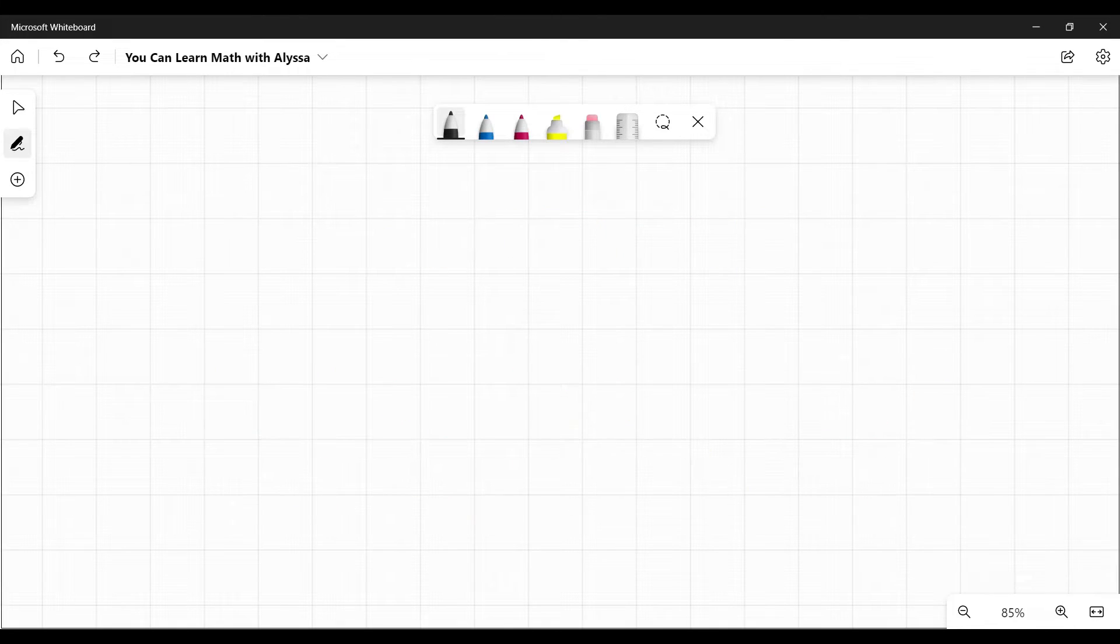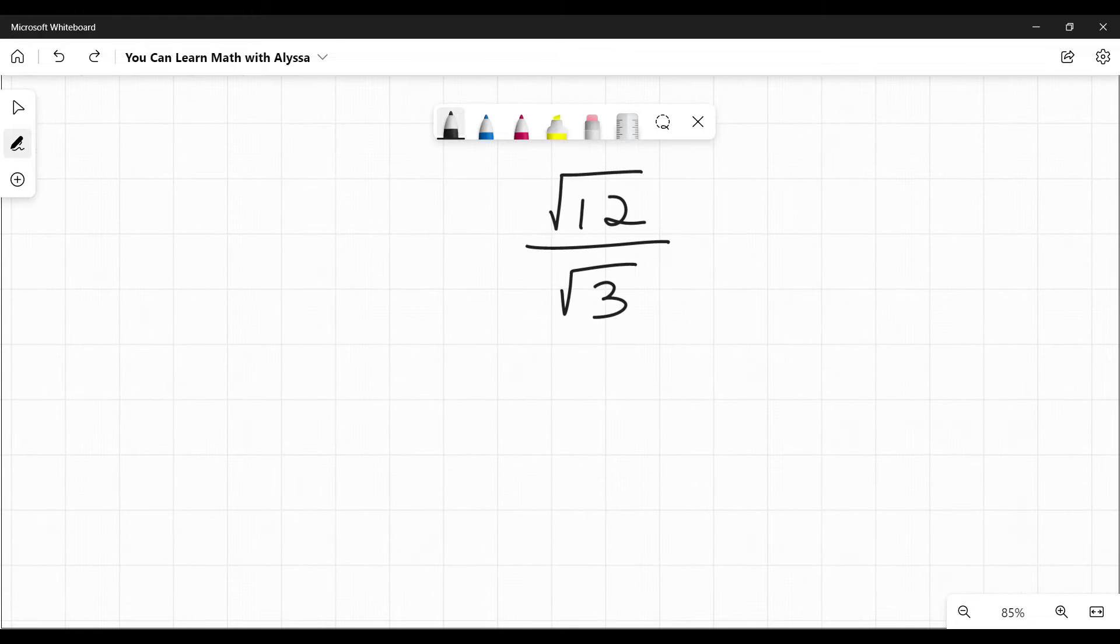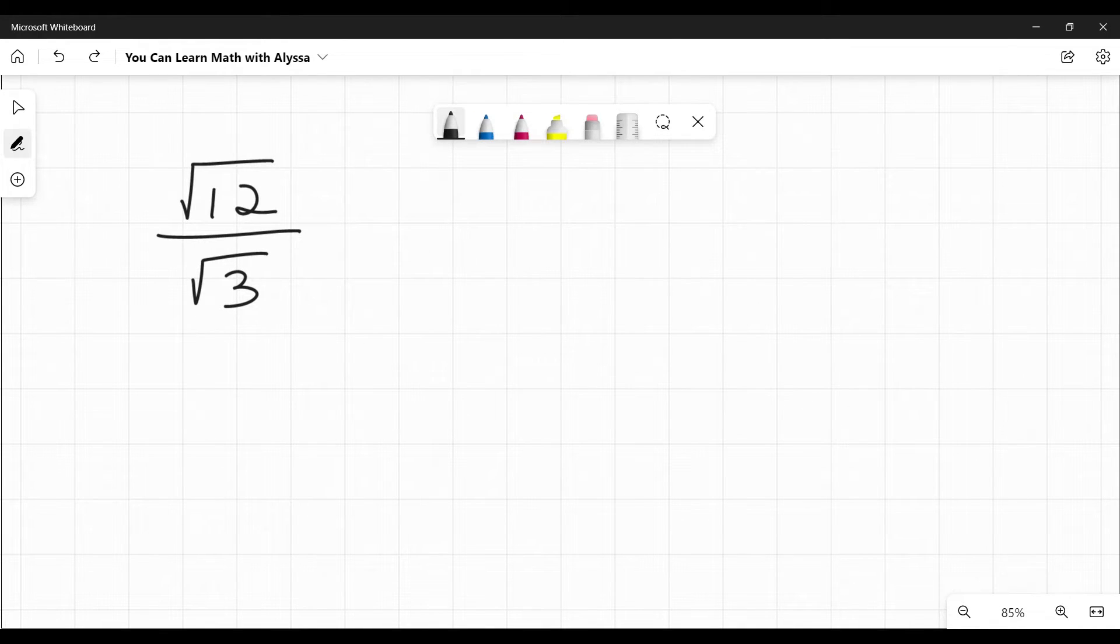Okay, so when we are dividing radicals they are almost always going to be presented like this. Honestly, I can't think of an exception, but some math book out there might try it. There's always an exception somewhere.